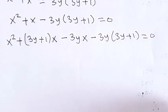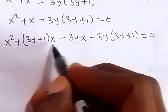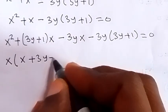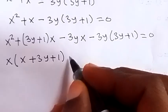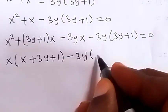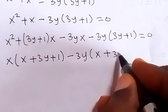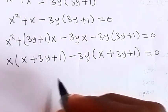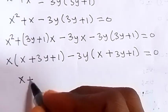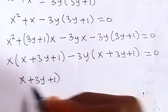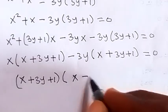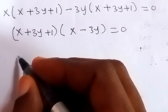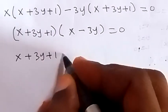Grouping two by two and factoring out what is common: from the first group, x is common, giving x times bracket x plus 3y plus 1. From the second group, minus 3y is common, giving minus 3y times bracket x plus 3y plus 1. Since x plus 3y plus 1 is common, we bring it out: bracket x plus 3y plus 1 times bracket x minus 3y equals zero.